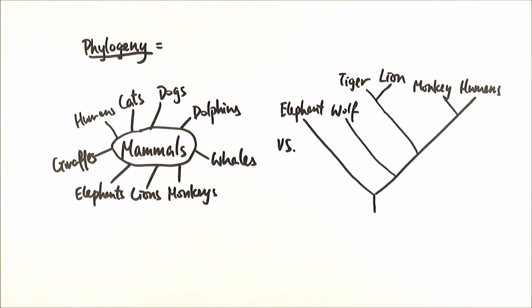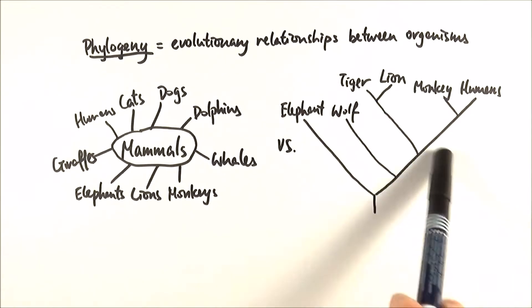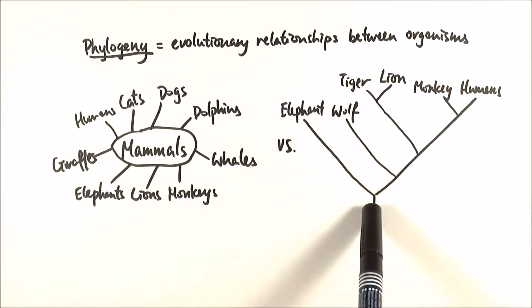We'll have a quick look at phylogeny — the evolutionary relationships between organisms. Phylogenetics is the study of such evolutionary relationships, and here you can see what we call a phylogenetic tree.